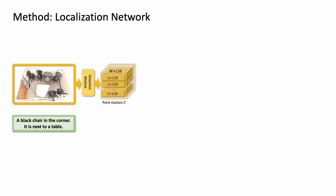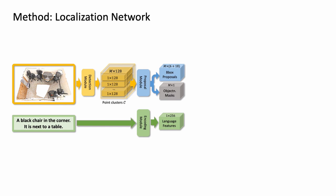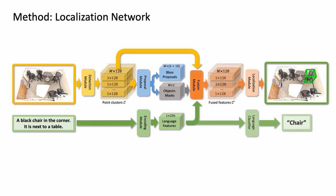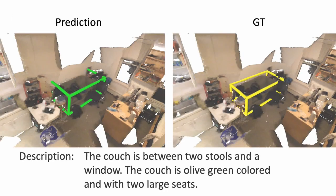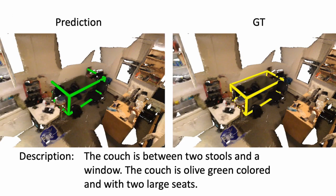Our method takes as input a point cloud for a scene and a freeform description for an object. The detection module predicts point clusters, which are further used by the proposal module to produce individual object proposals and object masks. The localization module and language classifier predicts the target object bounding box and the class labels for the input description. The qualitative results show that our method is capable of localizing target objects in a given 3D context.